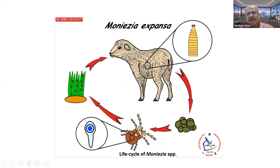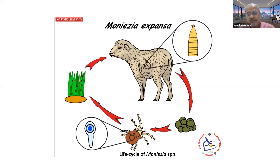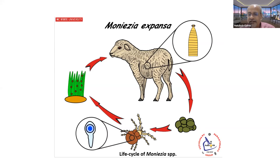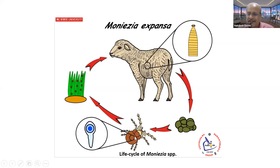Oribatid mites are present in every type of soil — you can collect a soil sample from your backyard and you will find one or the other species of oribatid mites. Not all species act as intermediate hosts, but about 28 different species act as intermediate hosts for Moniezia and other tapeworms. That is how oribatid mites act as intermediate hosts, where the infective stages develop, and sheep and goat acquire infection by consuming these oribatid mites.